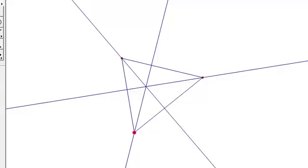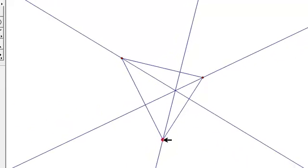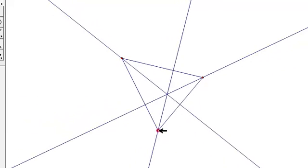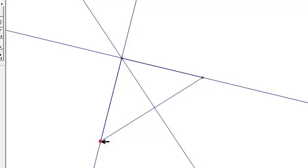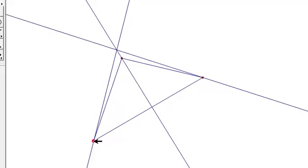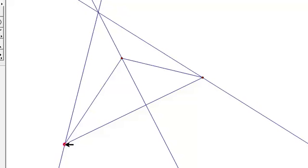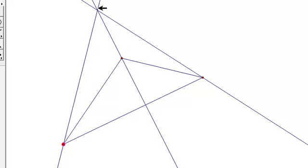Where the orthocenter is in relation to the full triangle depends on what type of triangle it is. For an acute triangle like this one, the orthocenter is inside the triangle. If you make it a right triangle, the orthocenter is on the triangle at the right angle.